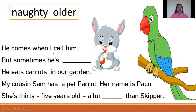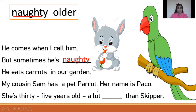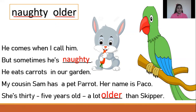He comes when I call him, but sometimes he is naughty. He eats carrots in our garden. My cousin's son has a pet parrot. Her name is Paco. This is Paco, a parrot, and this is Keeper, the rabbit. She is 35 years old — a lot older than Keeper. Good job, the answer is older.